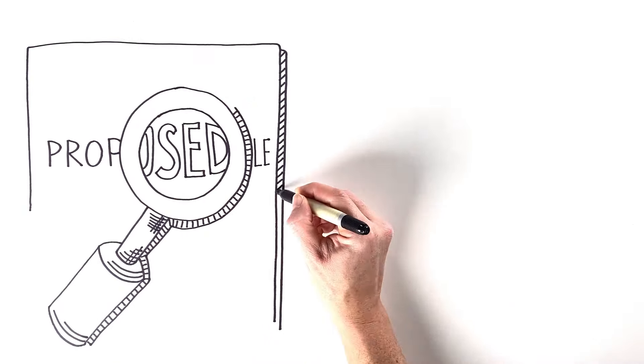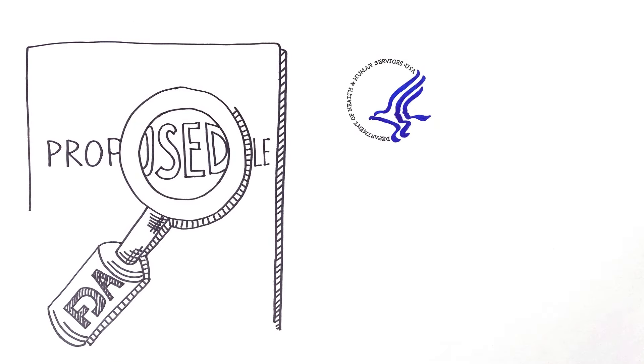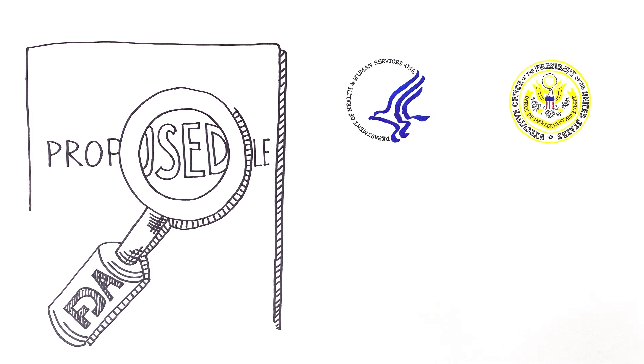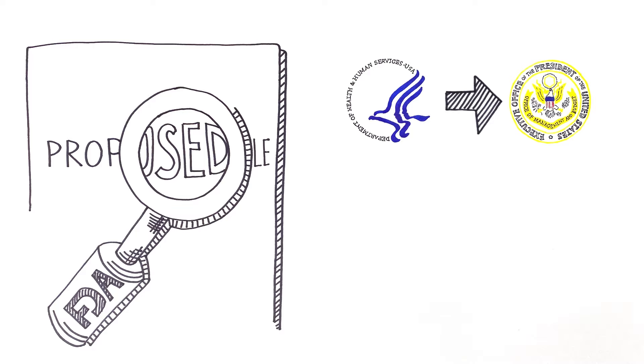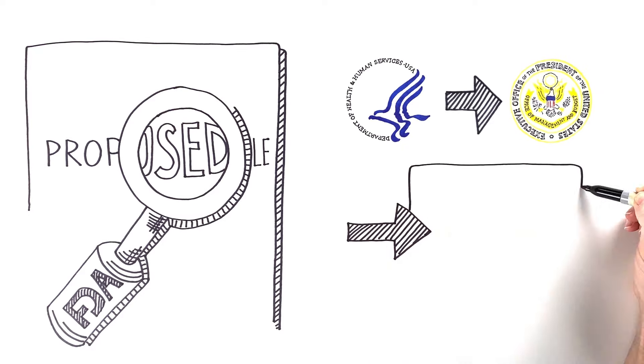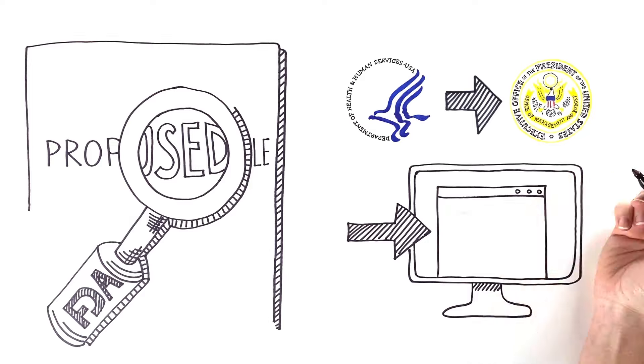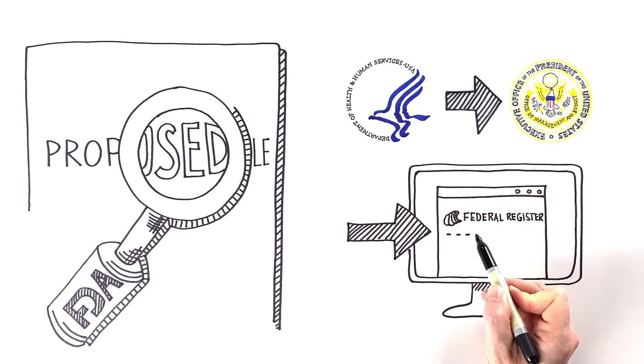After that, other parts of the federal government, such as the Department of Health and Human Services, or HHS, and the Office of Management and Budget, or OMB, also review it. After all the reviews are completed, a proposed rule, also called a Notice of Proposed Rulemaking, or NPRM, is published in the Federal Register for Public Comment.